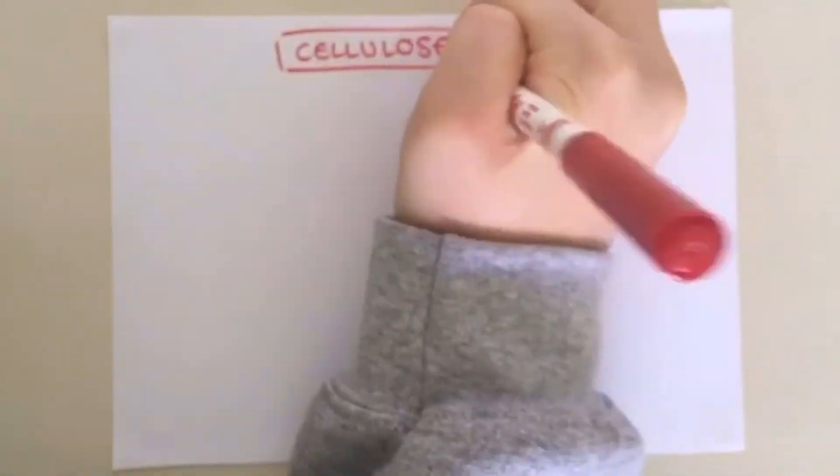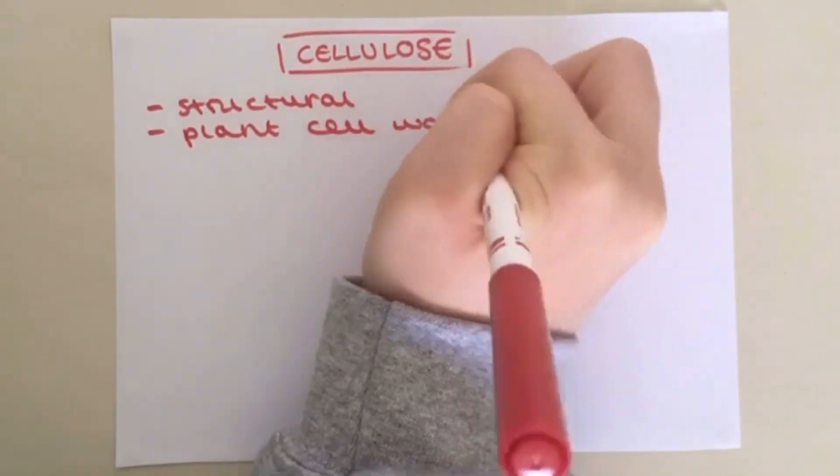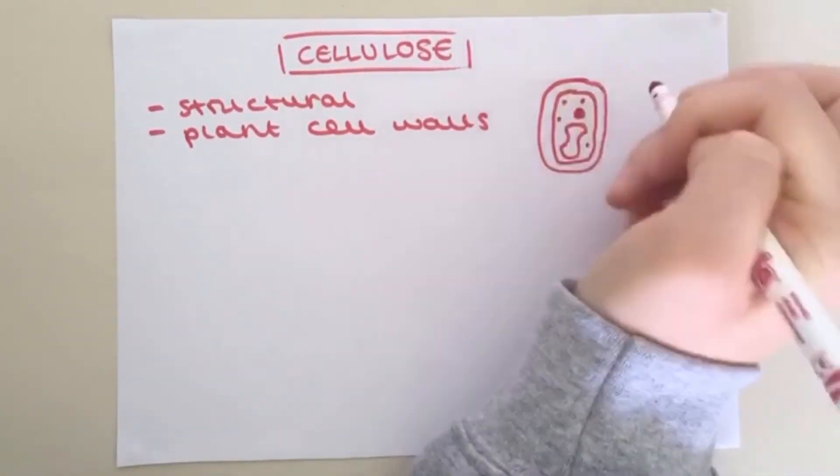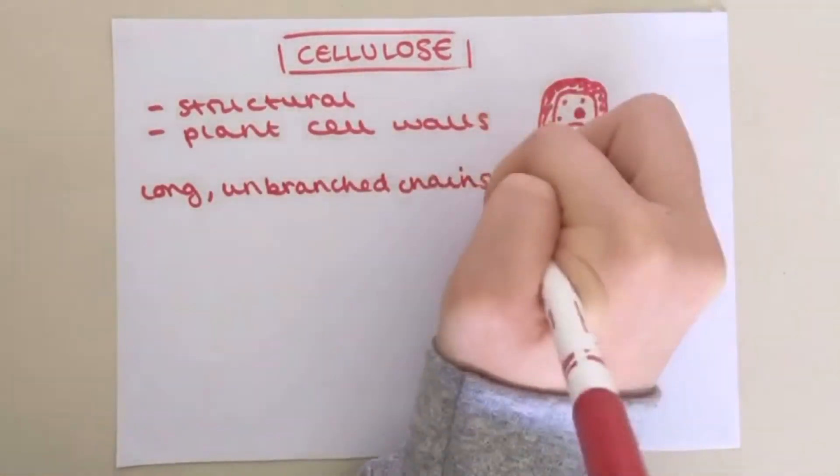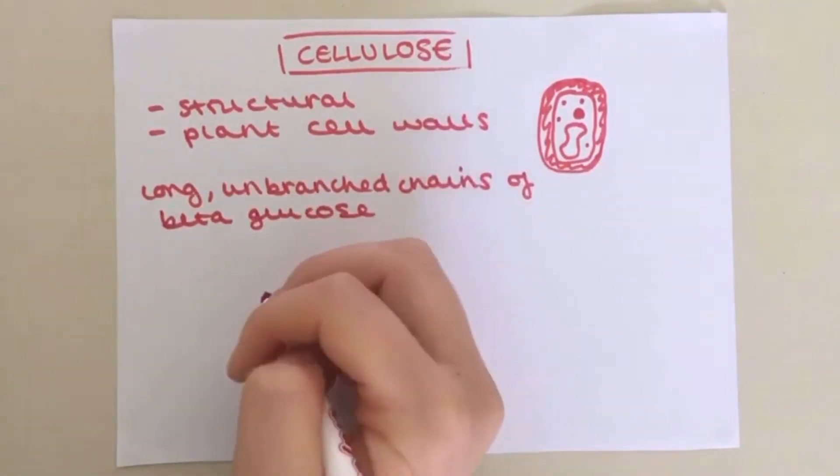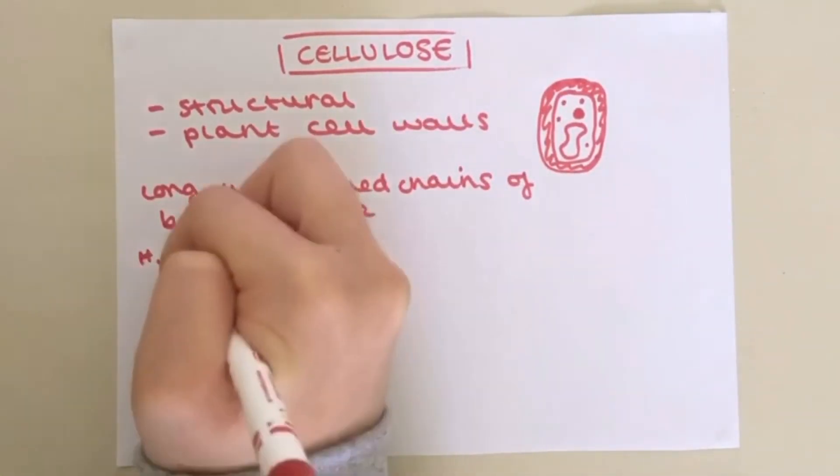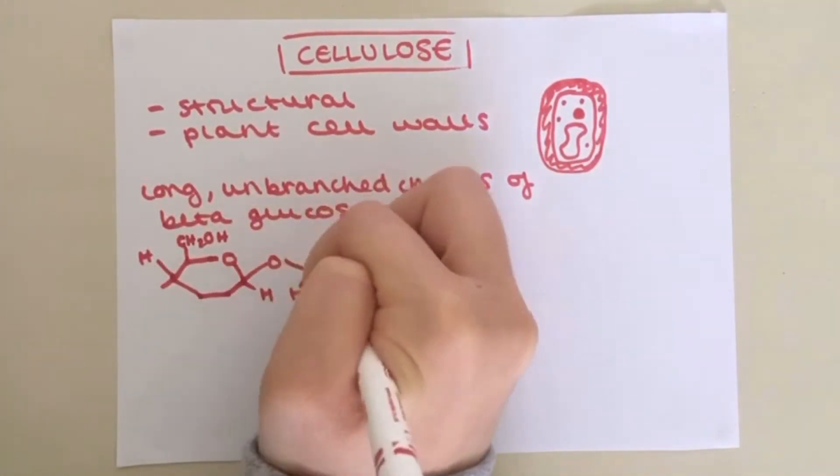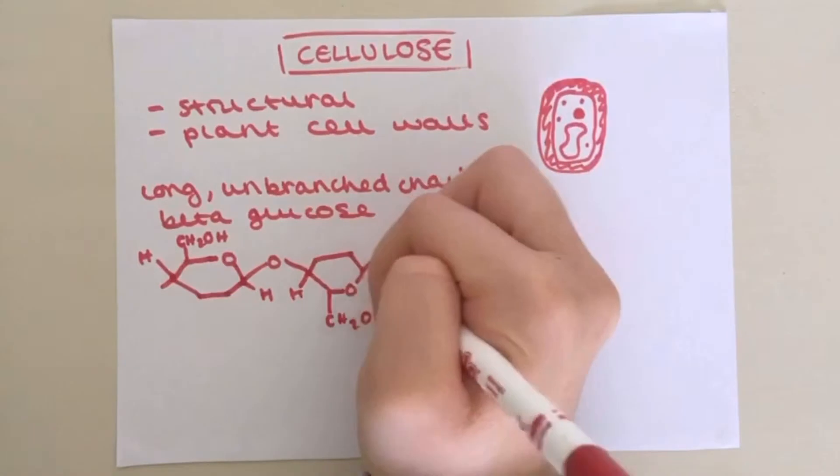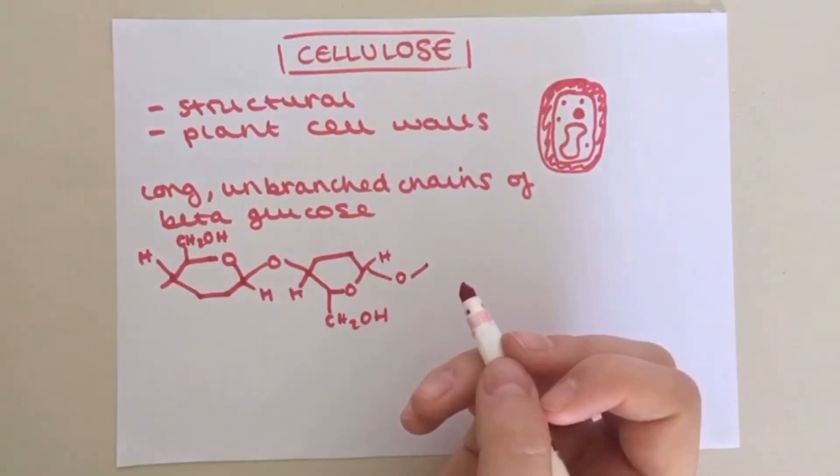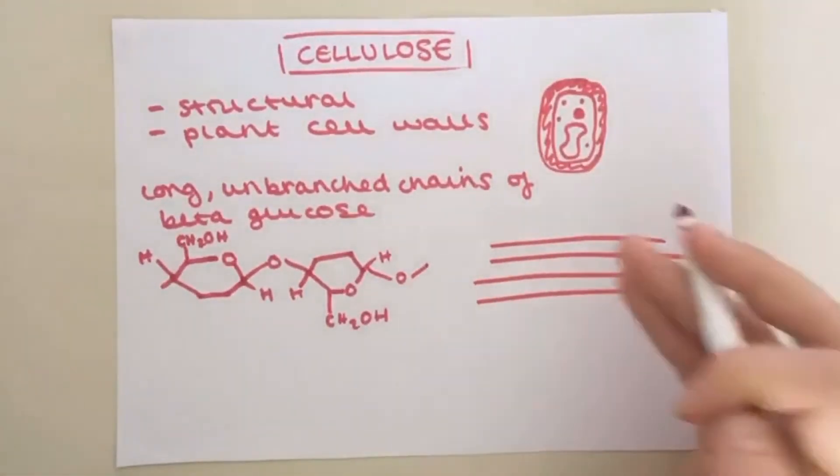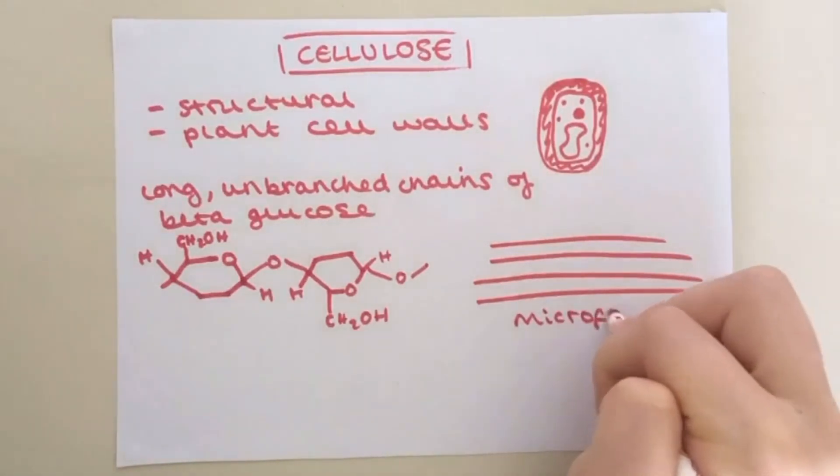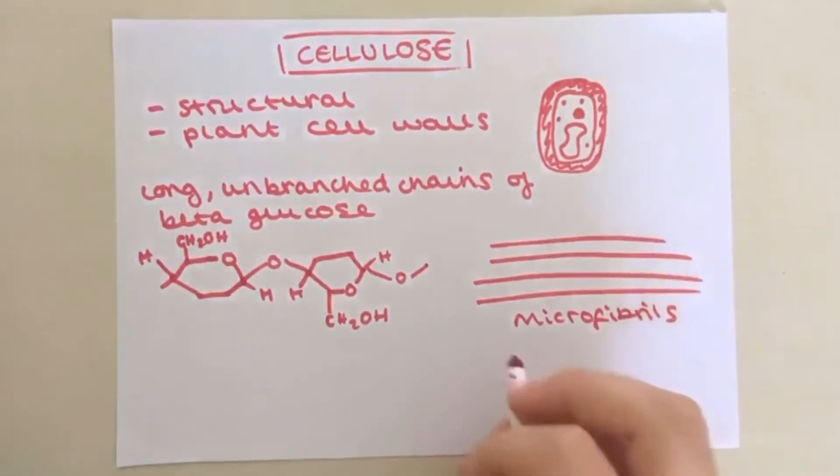Cellulose is a structural polysaccharide found in plant cell walls. It is formed from long unbranched chains of beta glucose. Every second monomer is rotated 180 degrees so that the OH groups end up next to one another for the condensation reaction to take place and the glycosidic bonds to form. The chains of cellulose are joined together with hydrogen bonds forming incredibly strong structures known as microfibrils. This strength is important because it stops plant cells from bursting when water enters by osmosis.